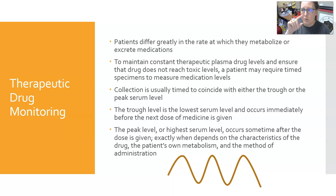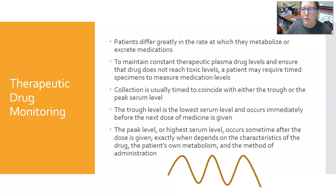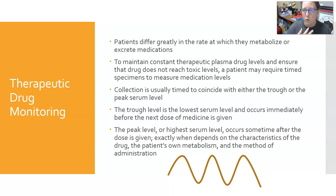The collection is usually timed to coincide with either the trough or the peak serum level. The trough is the point at which the blood level of the drug is going to be the lowest. The trough is often drawn right before the next dose is given. The peak is usually drawn at an interval after the medication has been given, depending on whether the medication is given through an IV or orally, as there is a different window for maximum absorption and circulation in the blood.